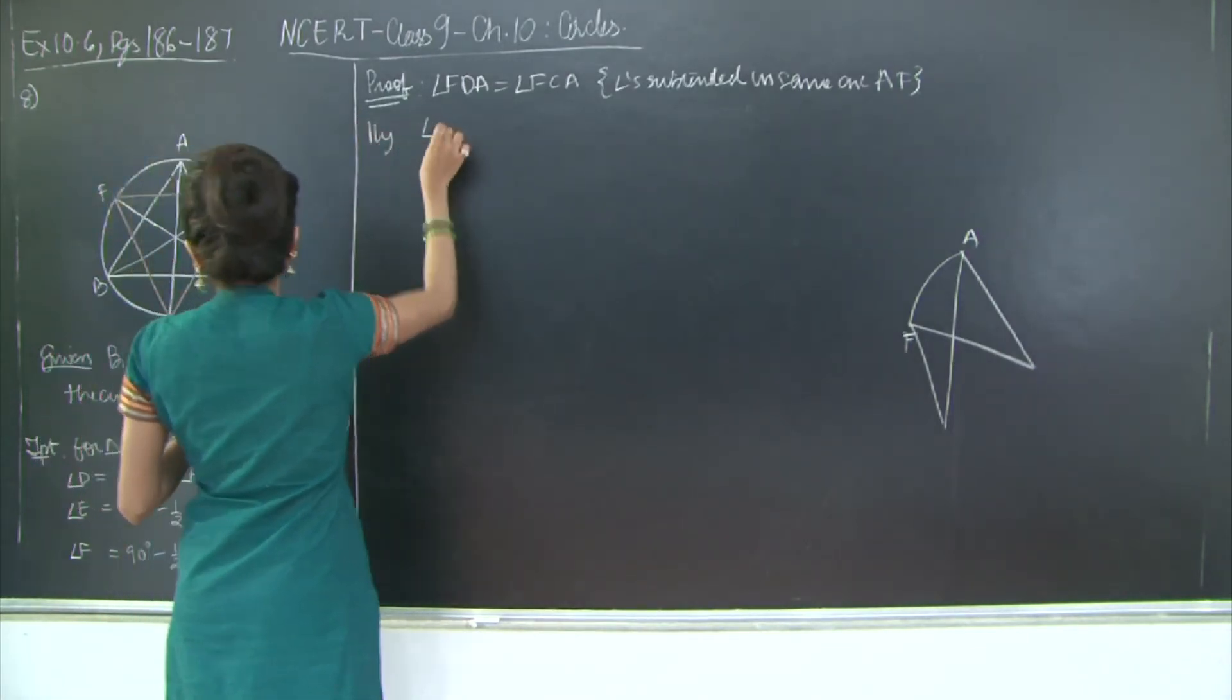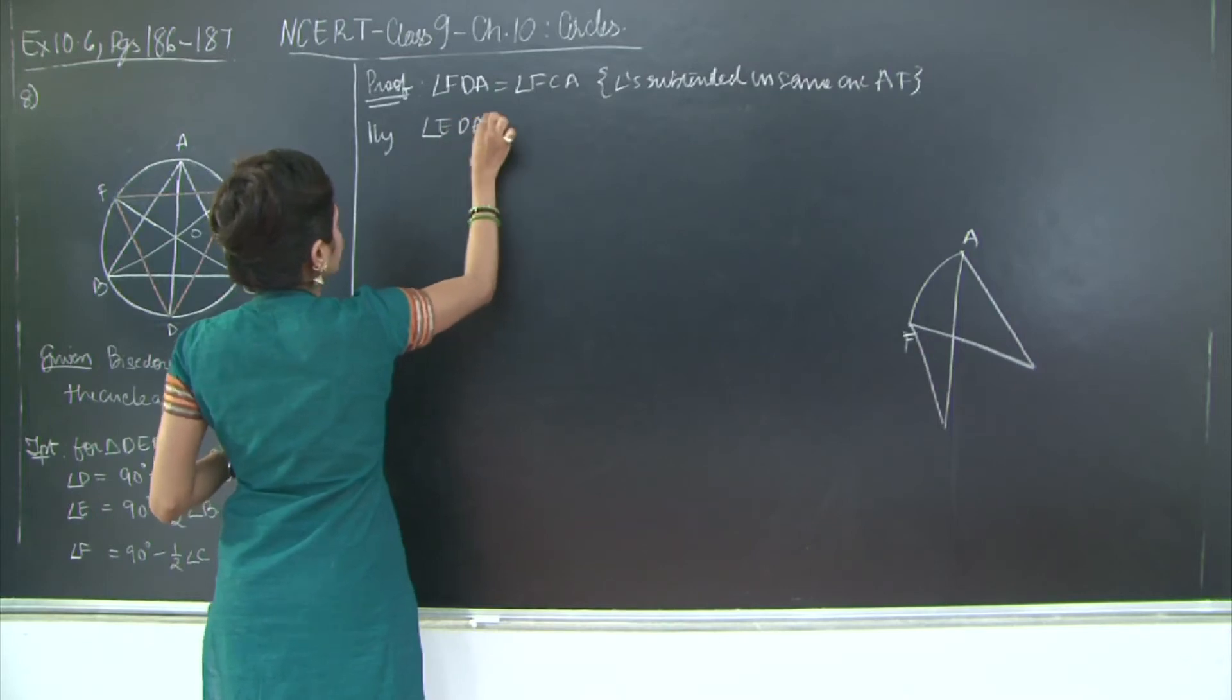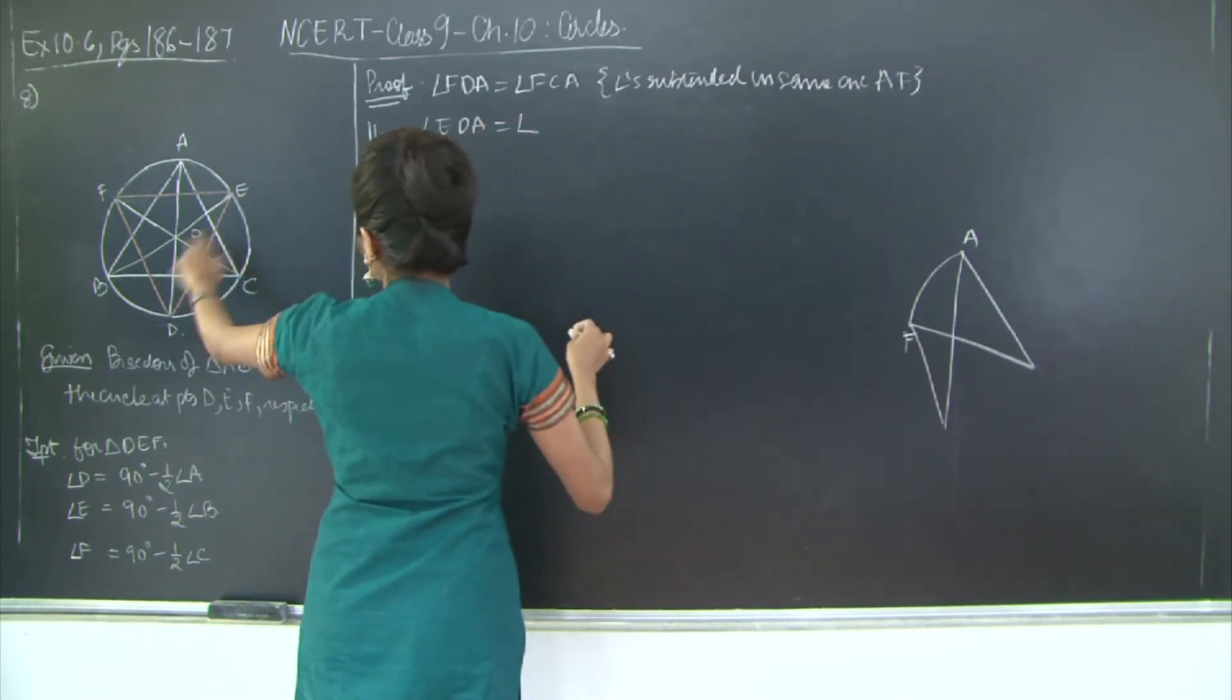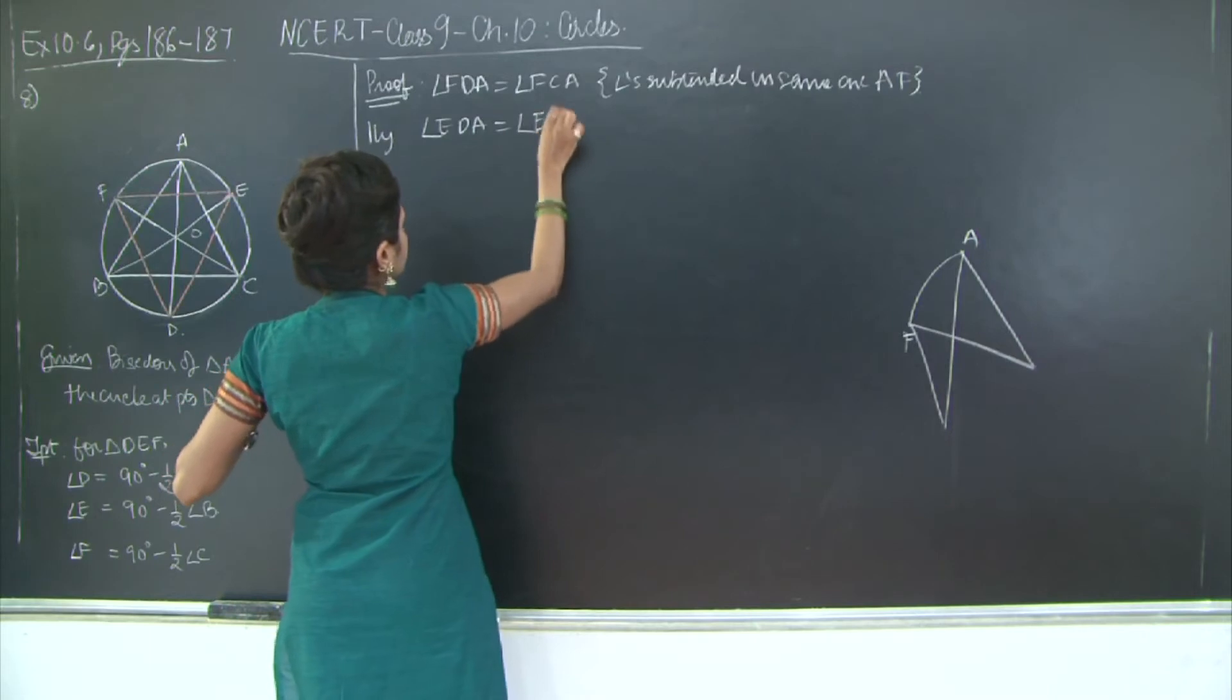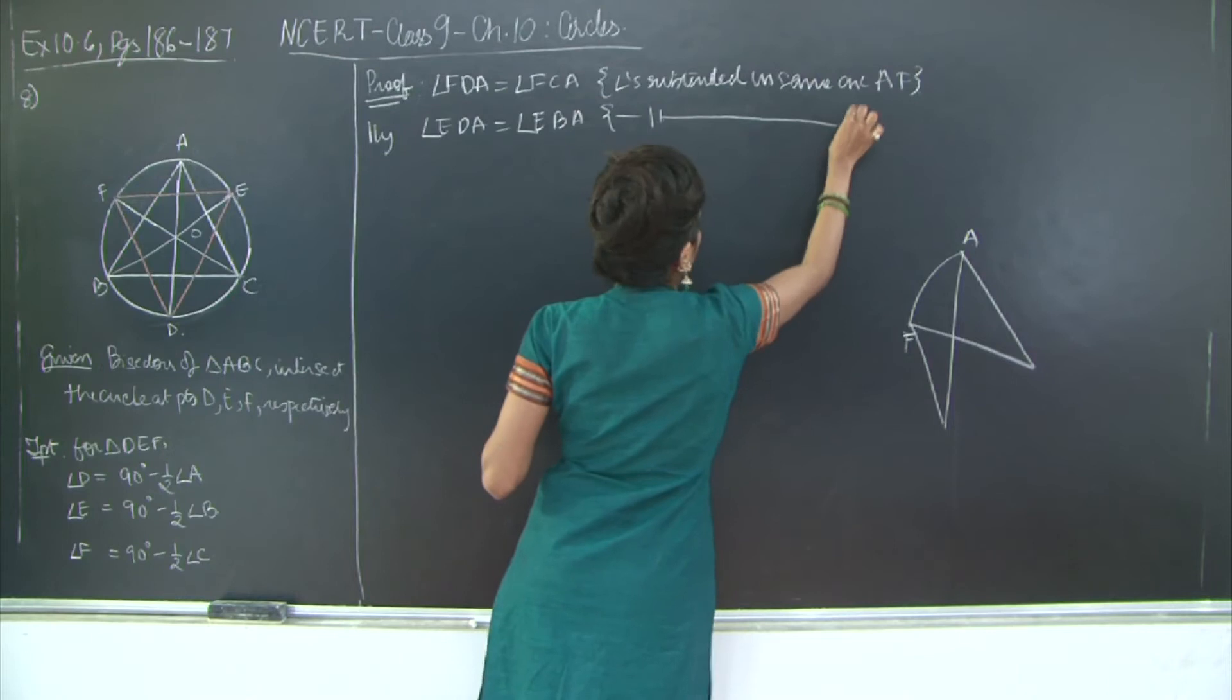Similarly I have angle EDA is equal to angle EBA, because they are the angles subtended in the same arc AE.